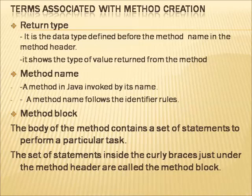Then we have the method name, which is simply the name of the method. When we create method names we have to strictly follow the identifier rules. Then we have the method block, which is the body of the method or body of the function. Within the curly braces after the method header — the content within those curly braces is called the method block. It is a set of statements that need to be performed for accomplishing a particular task.